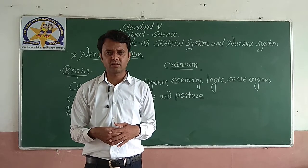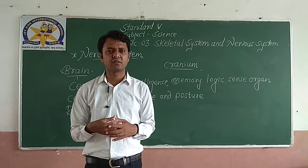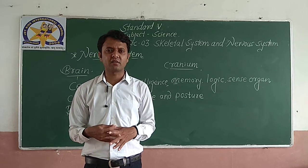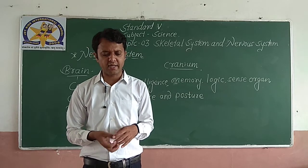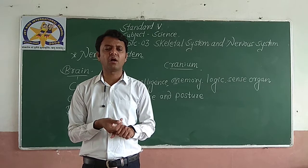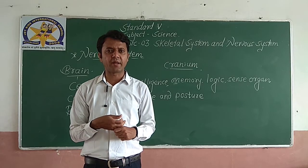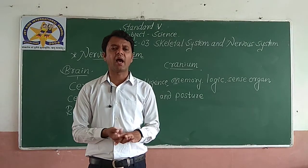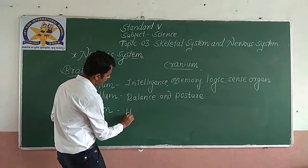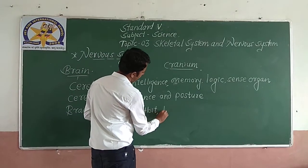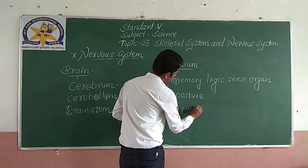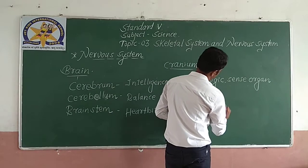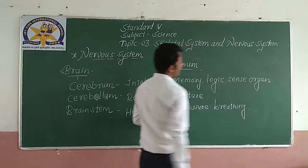The third part is the brain stem. It is a stem-like structure which connects the brain to the spinal cord, also called medulla. The nerves in the brain stem control our heartbeat, breathing, and blood pressure.